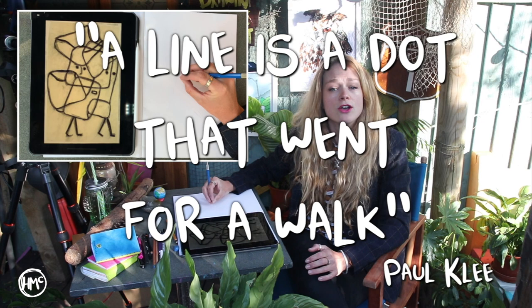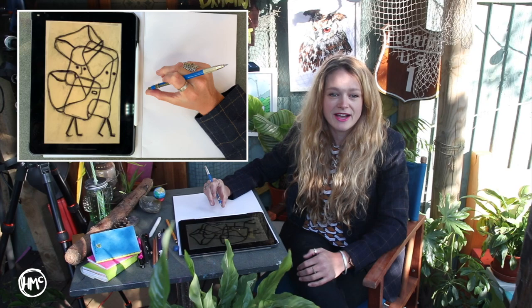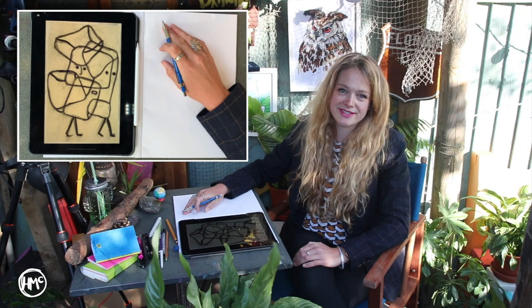A line is a dot that went for a walk. The artist Paul Klee said this and I know my mathematician friend would say that this is wrong and the definition of a line is a straight one-dimensional figure having no thickness and extending infinitely in both directions with no wiggles anywhere along its length. Our line today is going to be extra wiggly as it's inspired by Paul Klee's quote.